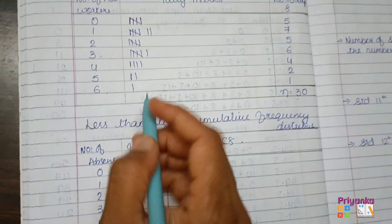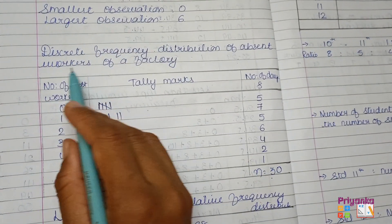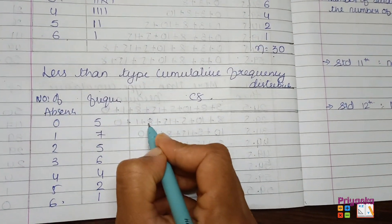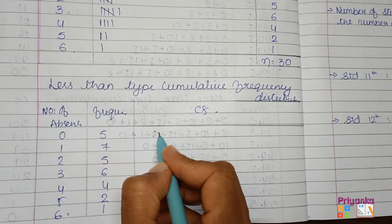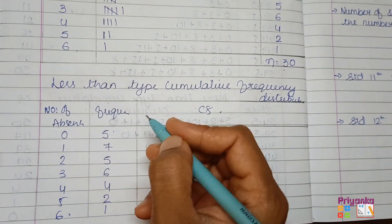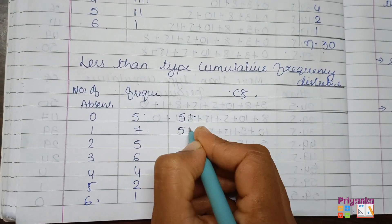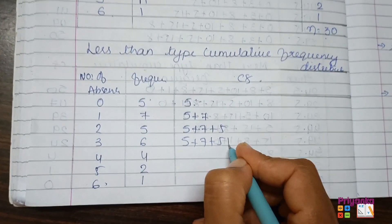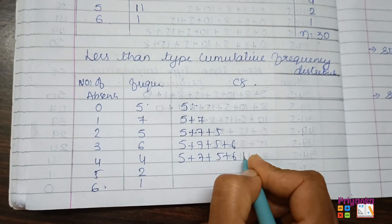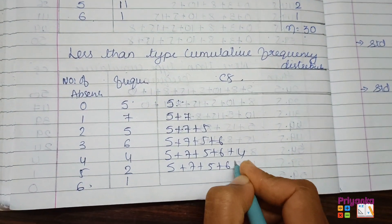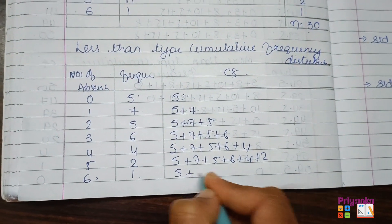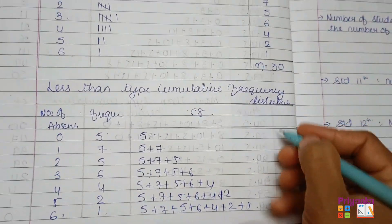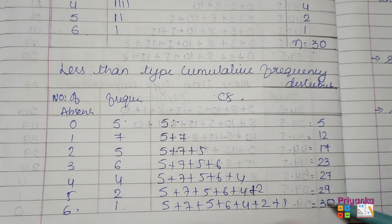When the information is given as a discrete frequency distribution, here we are not turning it into any class — the same class will continue. The most important thing: we will not start with 0. We start with the first frequency, that is 5. Next is 5 plus 7, then 5 plus 7 plus 5, then plus 6, then plus 4. At the end, just bring out the total. Here we get the less-than cumulative frequency and the total.